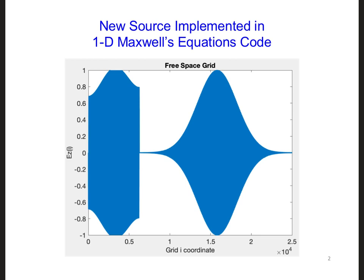To the right of the source, we saw the type of propagation we expect for an electromagnetic wave propagating in free space. But to the left of the source, we saw some very different behavior.